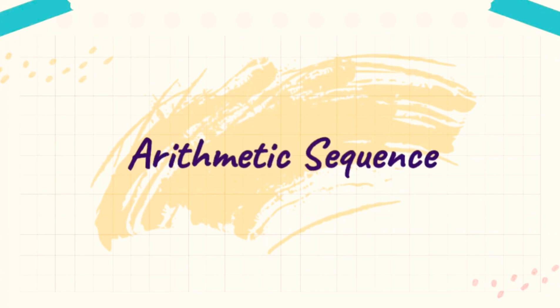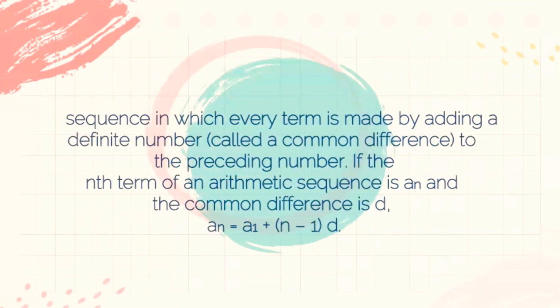First is arithmetic sequence. Arithmetic sequence is a sequence in which every term is made by adding a definite number, called a common difference, to the preceding number. If the nth term of an arithmetic sequence is a sub n, and the common difference is d, the formula is a sub n equals a sub 1 plus the quantity of n minus 1 times d.